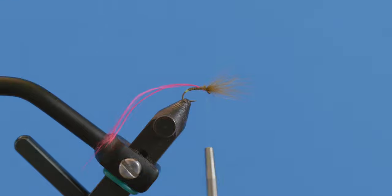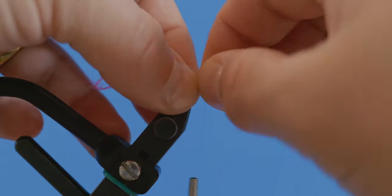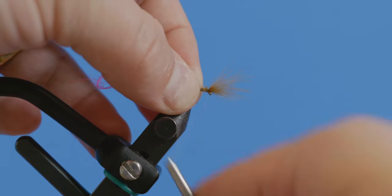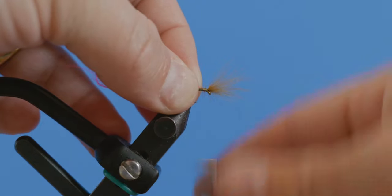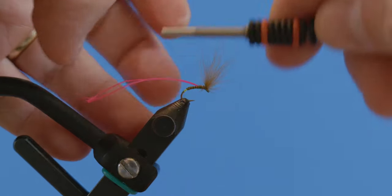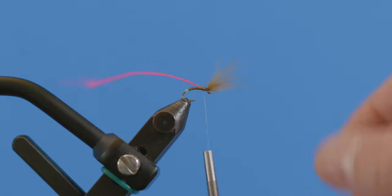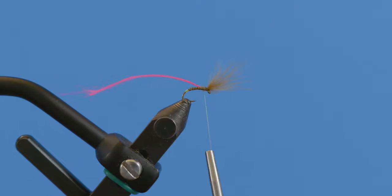Then I'm going to come in, trim this off real tight like that. Then you can come back in. It's going to want to spin on you, so you got to be real careful here. You come back in and tighten all those down. Make sure that you have some wraps in front, kind of lock it in just like that.